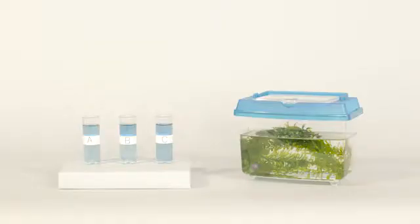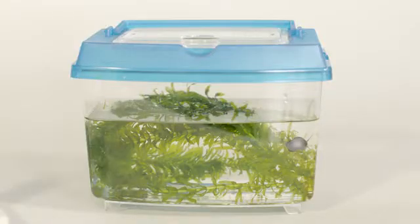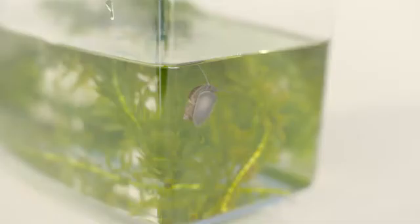In this experiment we see whether producers or consumers give off carbon dioxide. In the box we have a producer, the water plant called Elodia, and a consumer, the snail.